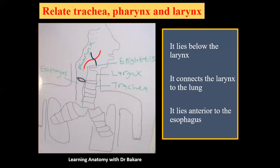The trachea can be physically examined by touching the anterior midline of the neck, where you can feel the alignment of the C-ring cartilages. This represents the general relationship between the trachea, the larynx, and the pharynx.